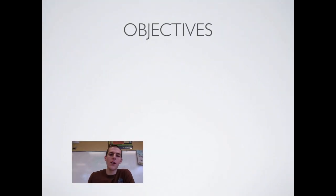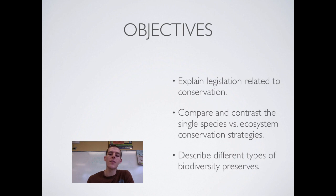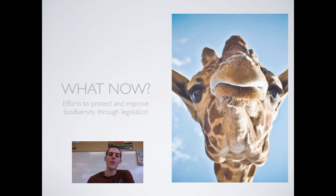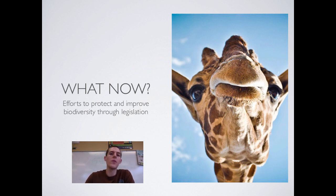Things you need to know by the end of this video: be able to explain legislation related to conservation, compare and contrast the single species versus ecosystem conservation strategies, and describe different types of biodiversity preserves. Throughout this whole class, our big thing has been talking about the environment and all the things that humans have done to impact it, and it's fitting that we finish with biodiversity because in reality it's the biodiversity of this world that keeps us alive. So we need to look at what we can do to preserve and promote that biodiversity.